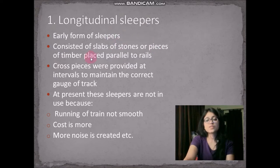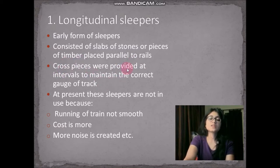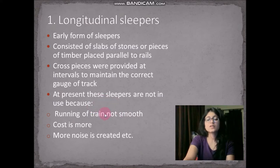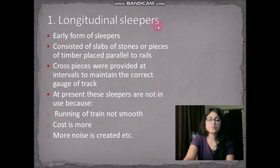Longitudinal sleepers were made of slabs of stone and pieces of timber placed parallel to the rails, and cross pieces were provided at certain intervals to maintain the correct gauge of the track. At present, these sleepers are not used because the running of trains was not smooth.